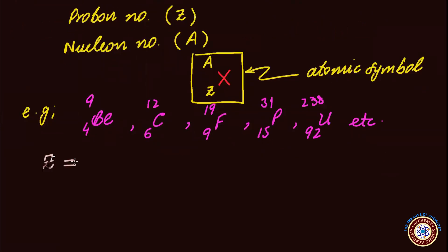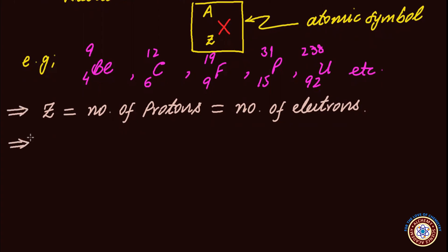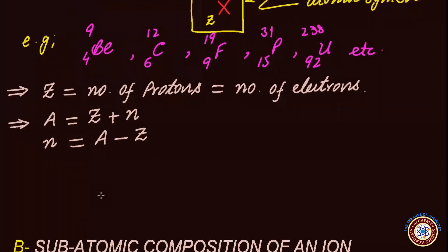Z directly gives the number of protons in the nucleus. Since atoms are electrically neutral, the same number of electrons revolve around the nucleus, so Z also directly gives the number of electrons. The nucleon number A equals the number of protons plus the number of neutrons, so neutrons can be calculated as A minus Z. By doing these simple calculations, we obtain the subatomic composition of the atom.